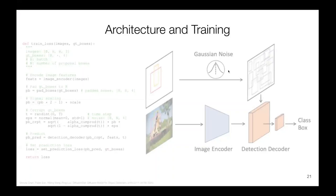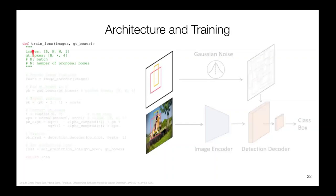I'm going to go over the architecture and training for DiffusionDet. This is the train loss pseudocode. It takes as input the raw input images and the ground truth annotated boxes. The image dimensions are batch, height, width, and three RGB channels. For the ground truth boxes, we have the batch, an asterisk, and four — where four represents center coordinate X, center coordinate Y, height and width. The asterisk is because the instance number in each image will vary — for example, here we have a horse and a person, so that's two instances, but it could be three horses or three people.